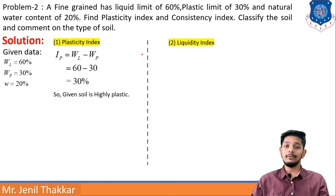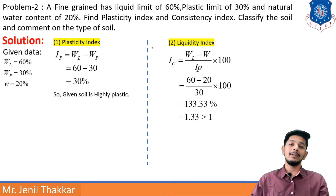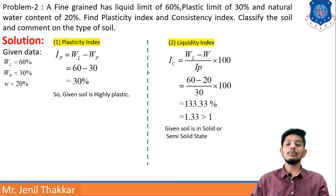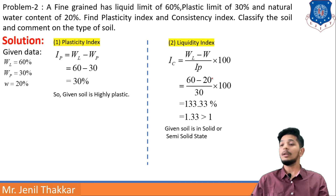Now finding consistency index: IC = (WL − W) / IP × 100 = (60 − 20) / 30 × 100 = 1.33, which is greater than 1. Due to this value being greater than 1, the soil will be in solid or semi-solid state. So we can classify the soil as highly plastic and in a semi-solid state.